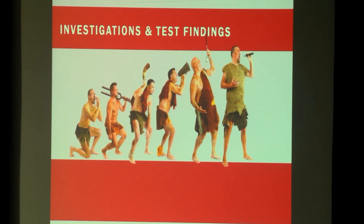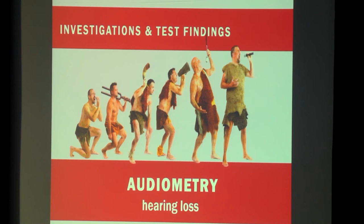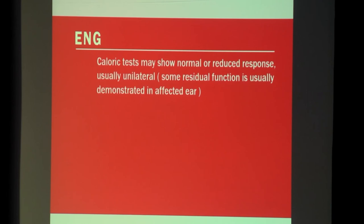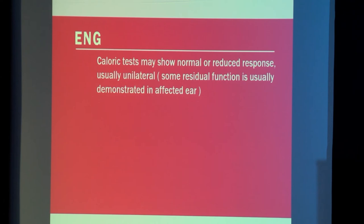We investigate these patients further. The important investigation is audiometry, which will clearly give us an idea whether the person has unilateral or bilateral hearing loss. We also go to electronystagmography or videonystagmography, where the caloric test will either be normal or show a reduced response. It can be unilateral or bilateral depending on the stage at which the patient with Meniere's presents. It is essential that some residual function is usually demonstrated in the affected ear.